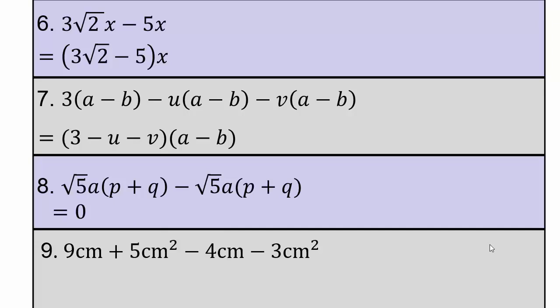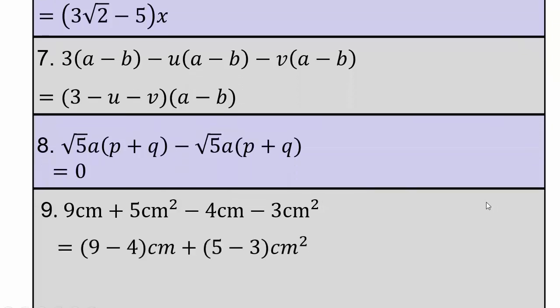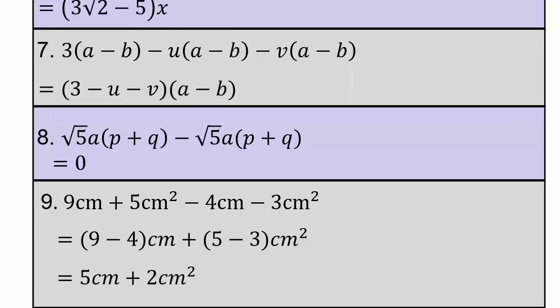For the final problem: combining 9 cm minus 4 cm, and 5 cm² minus 3 cm², we get 5 cm plus 2 cm².